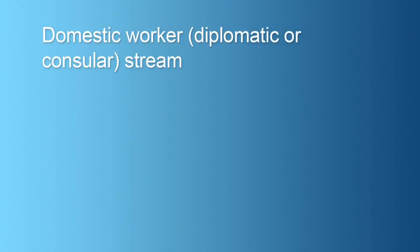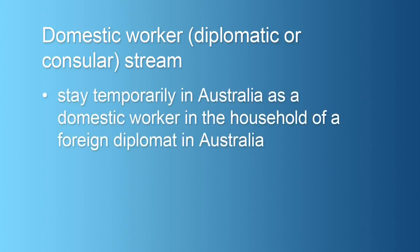The third stream, the domestic worker diplomatic or consular stream, allows an applicant to stay temporarily in Australia as a domestic worker in the household of a foreign diplomat in Australia who holds a subclass 995 diplomatic temporary visa.